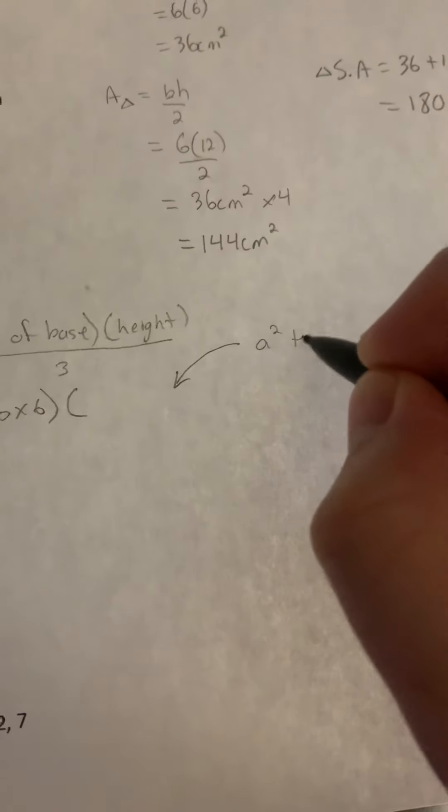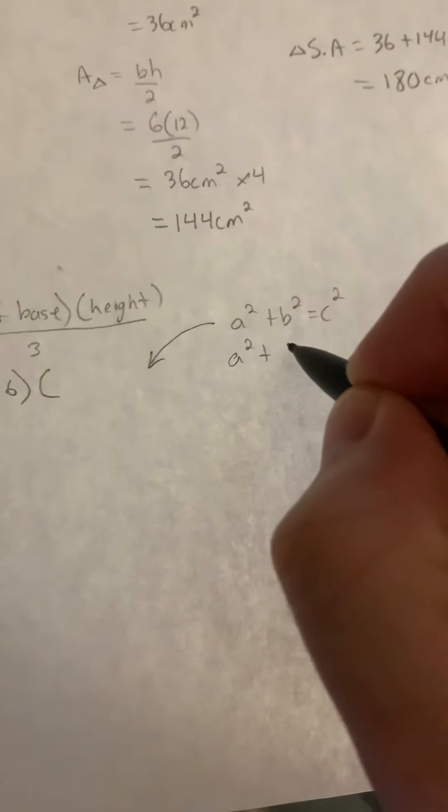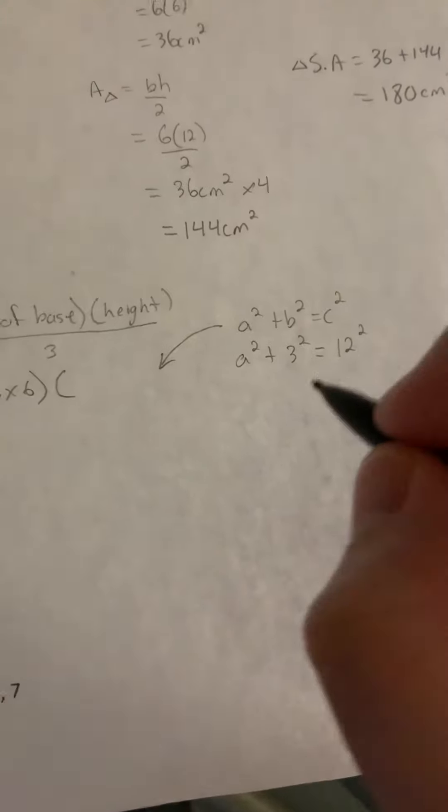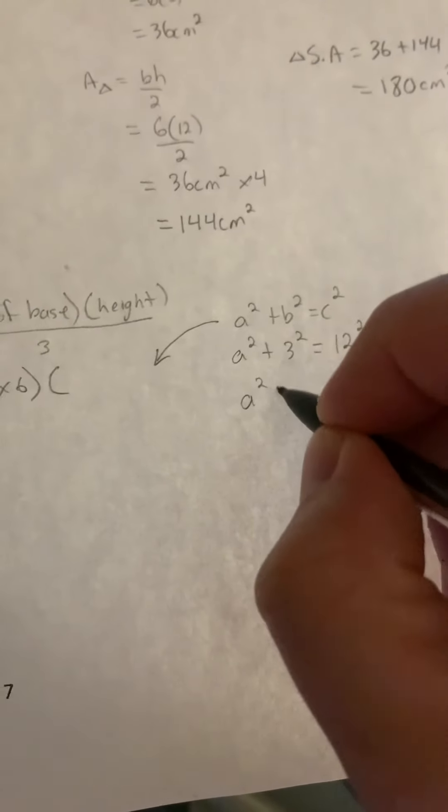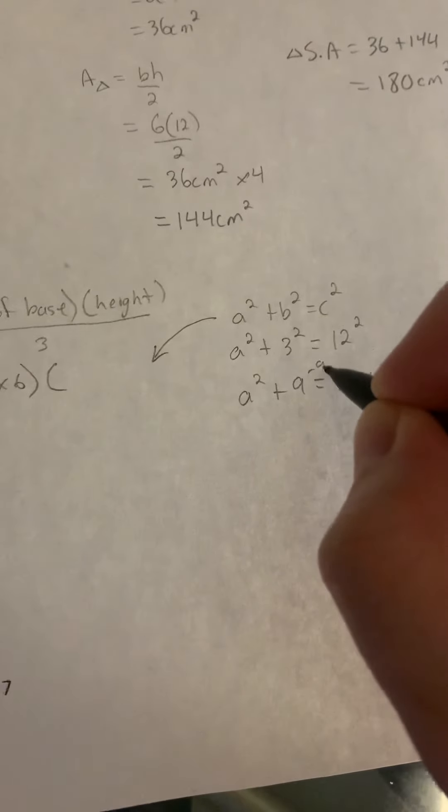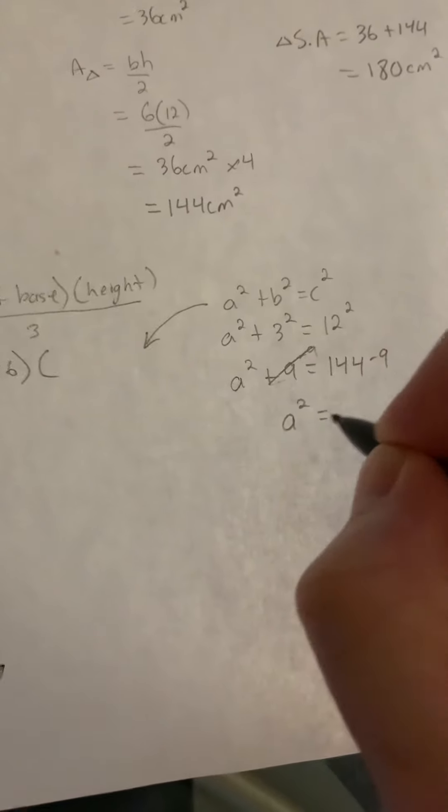So a squared plus b squared equals c squared. So we have a squared, we don't know. Then 3 squared equals 12 squared. So we get 9 equals 144. And we subtract 9. So we get 150.